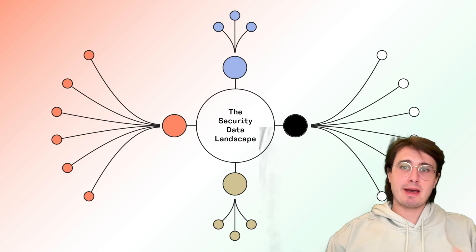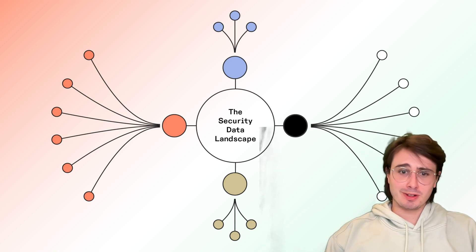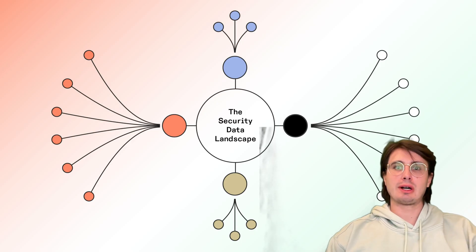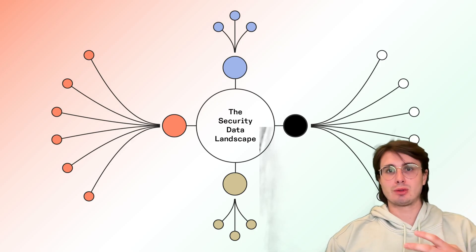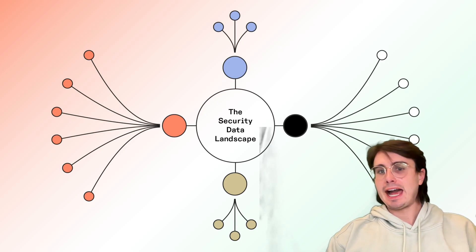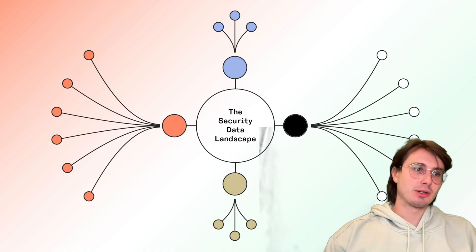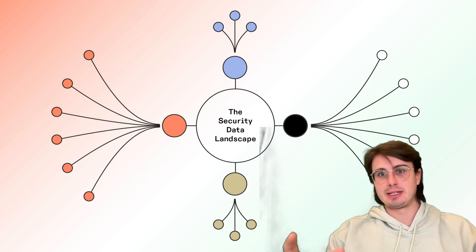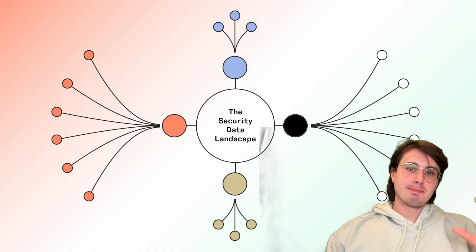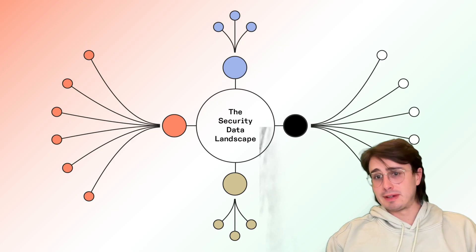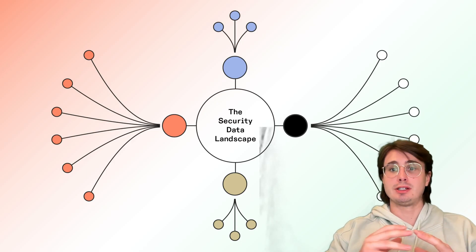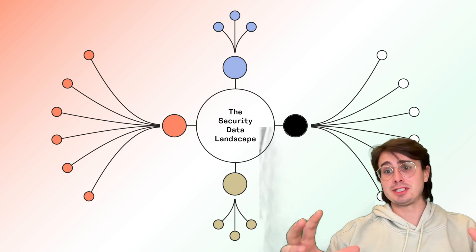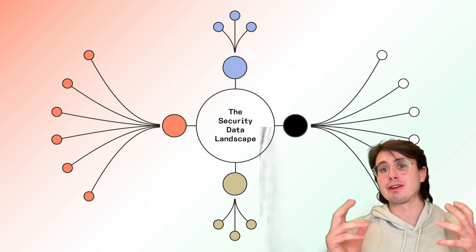Hey y'all, Data Guy here, back with yet another viewer request video. This time I'm going through a best practices guide for how you can implement security and compliance as a data engineer. I'll go through frameworks around data classification, access controls, encryption, compliance frameworks, and data privacy — practical advice you can use when designing systems, because it's a lot easier to design with these principles in mind than go back and fix it later.